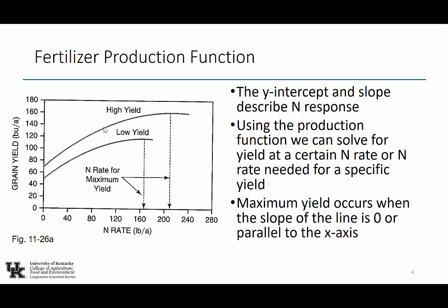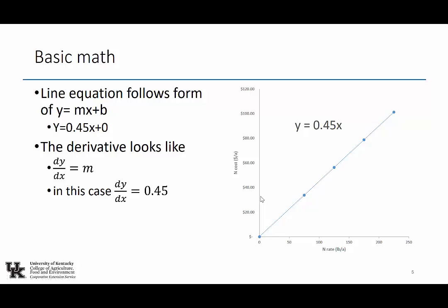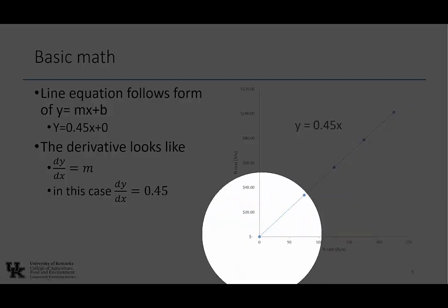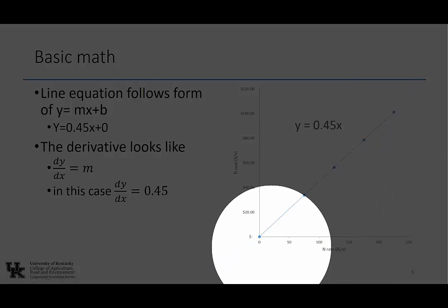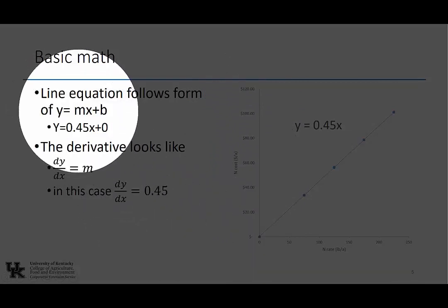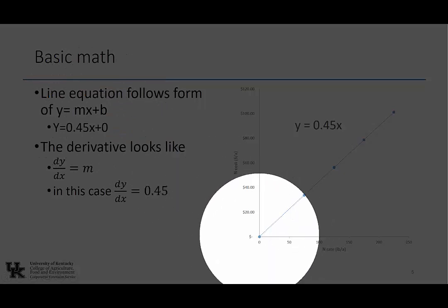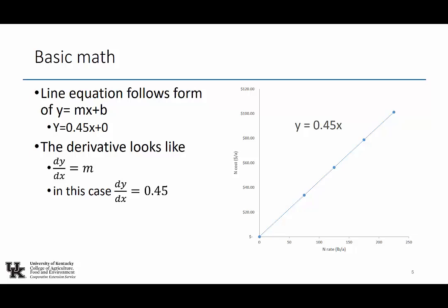A slope of zero is a flat slope. So we can solve for maximum yield by figuring out when the slope is zero. What we've got is nitrogen rate on the horizontal axis and nitrogen costs in dollars per acre on the vertical axis. This is 45-cent nitrogen because the slope is 0.45. For every unit increase in nitrogen rate, my cost per acre goes up 45 cents. A straight line has Y = MX + B. Zero pounds per acre of nitrogen costs zero dollars per acre, so it's Y = 0.45X + 0. That's 45 cents per pound of nitrogen.